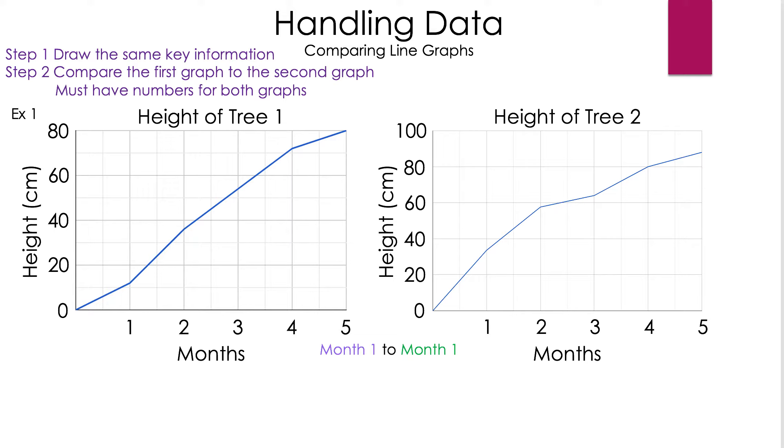Let's discuss month 1 to month 1. Now we're going to draw the key information. We've highlighted the area we're looking for. Now we need to find the height for each month. In tree 1 it is 12 centimeters, and in tree 2 it is about 32 centimeters.